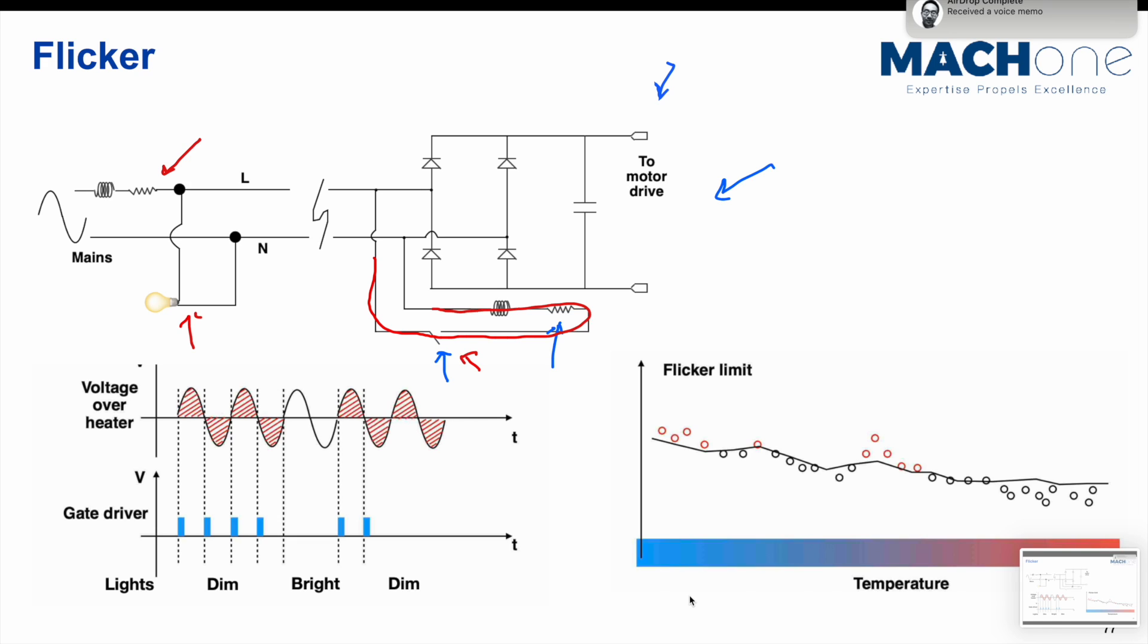And the control method we just introduced is often called mains zero crossing switching. And why is that? I can simply explain here. In order to have a better control of your heater, you may wonder, why can't we just use, for example, a phase angle control?